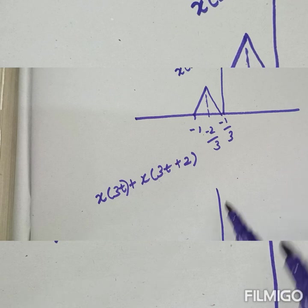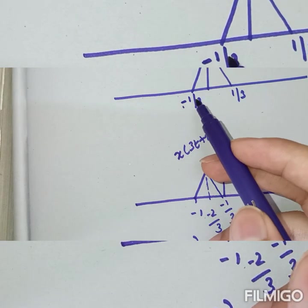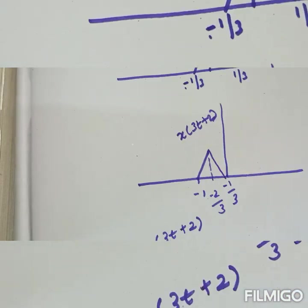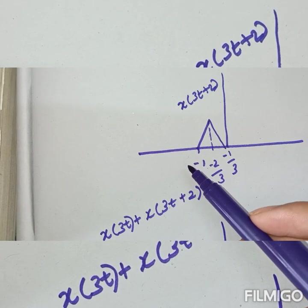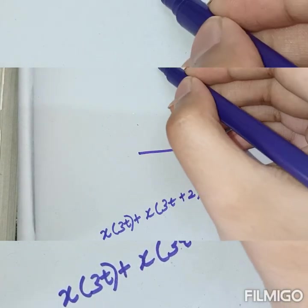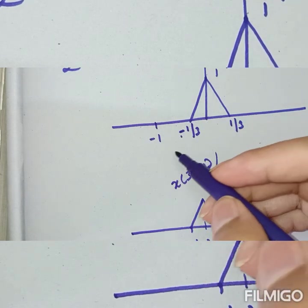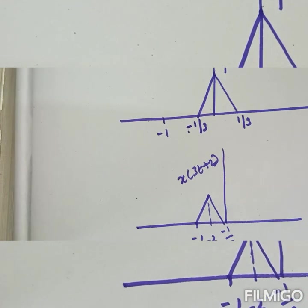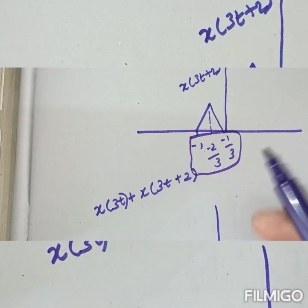From minus 1 to minus 1 by 3: in x of 3t plus 2 there is no signal in this region, so it contributes 0. But in x of 3t, from minus 1 to minus 1 by 3 there is a triangular signal present. So when you add 0 plus the triangular signal, you get the same triangular signal.